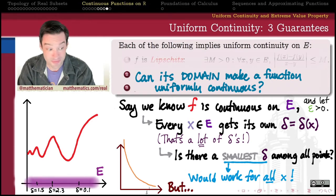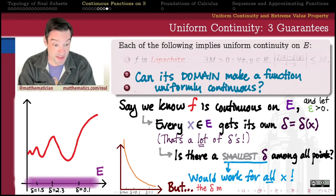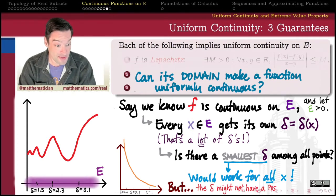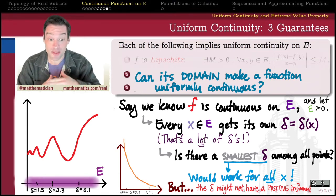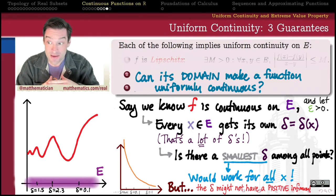The problem, of course, is that a smallest delta that works among all points might not be a positive number. However, the set of deltas that are associated with x's in my domain might not have an infimum, a greatest lower bound, which is greater than zero. The infimum might be zero.